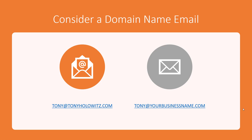One of the things I recommend is that you consider, if you're in business especially or even personally, getting a domain name — for example, a domain name of your first and last name. My name is Tony Hollowitz; I own the domain name TonyHollowitz.com. Once you own that domain name, you can set up an email address through it, such as Tony at TonyHollowitz.com. Or if you have a business, register your business name as a domain name. This is very important to do. Even if you use Yahoo, AOL, or Comcast, they have settings that allow you to set up that email address in Microsoft Outlook.